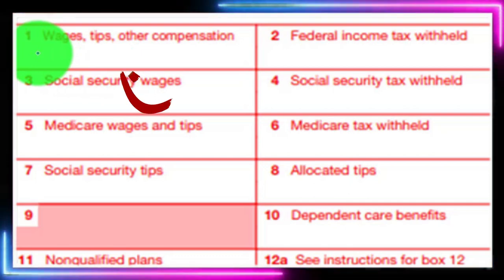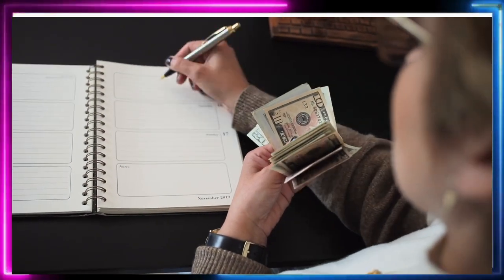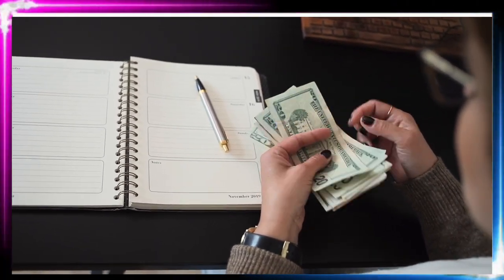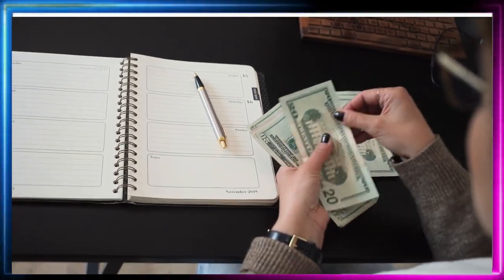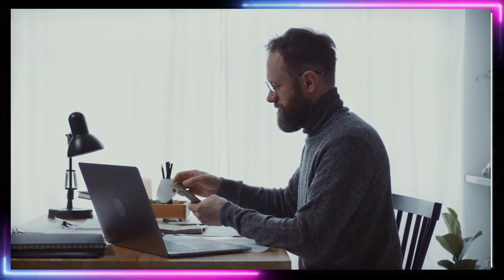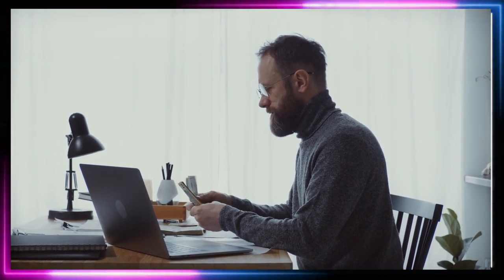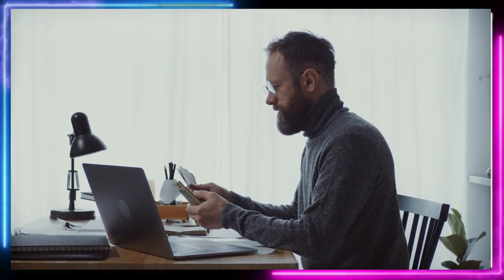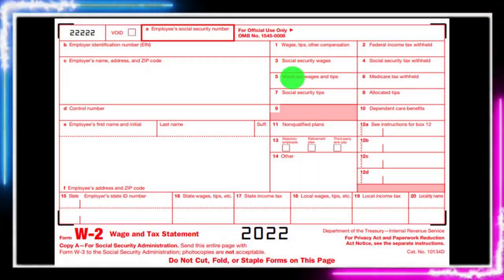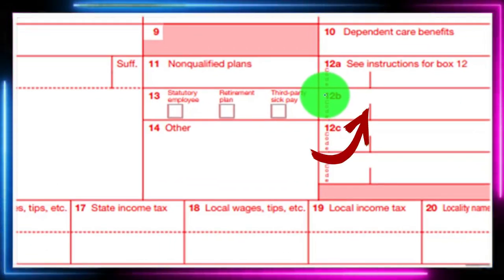When looking at Box 1, people often assume it represents their total income, but it's not necessarily so — Box 1 reflects taxable income only. If you have non-taxable benefits from your employer, like a 401(k) plan or certain health insurance, those won't be included in Box 1. This can be confusing when trying to verify actual earnings, since you could be earning more than Box 1 shows. Those withholdings for benefits like a 401(k) may appear down below.